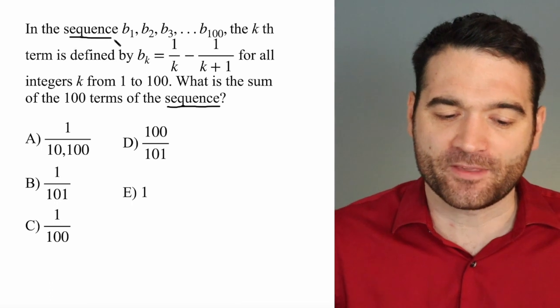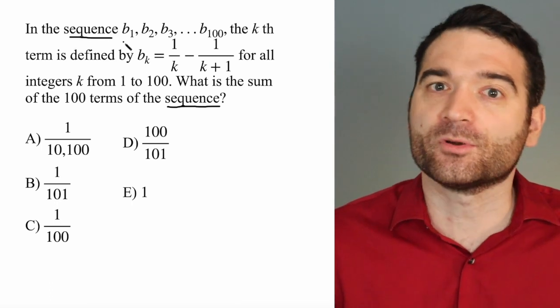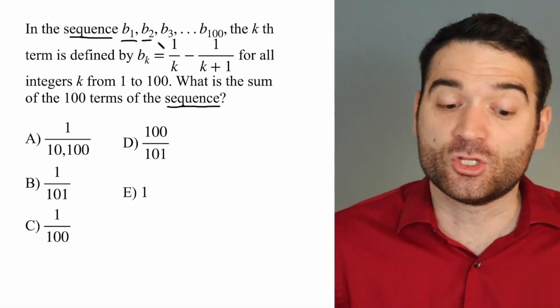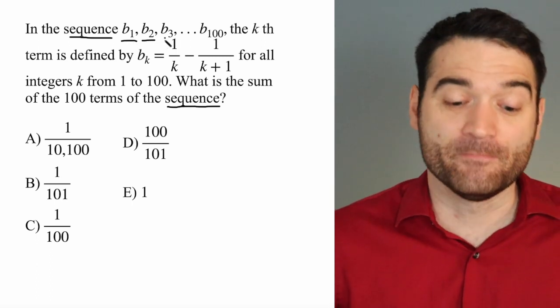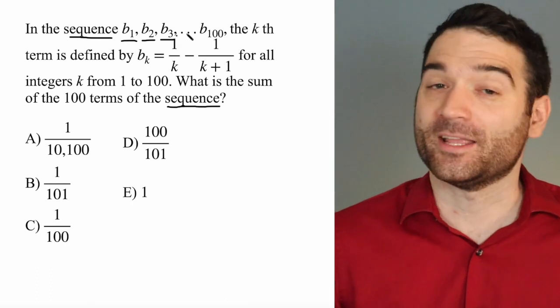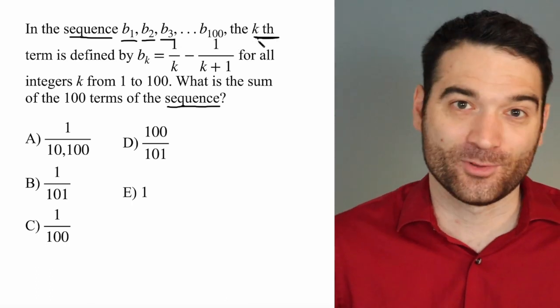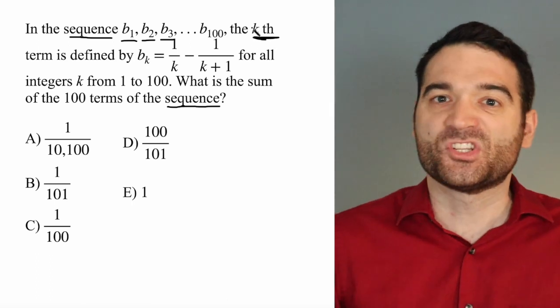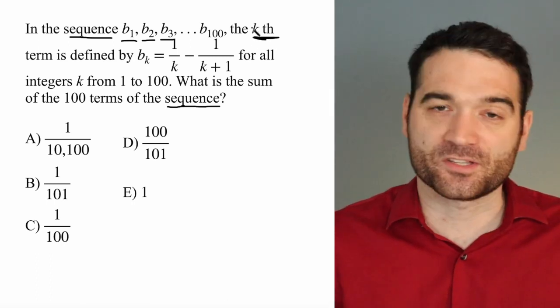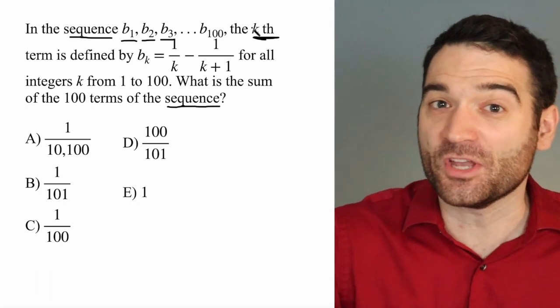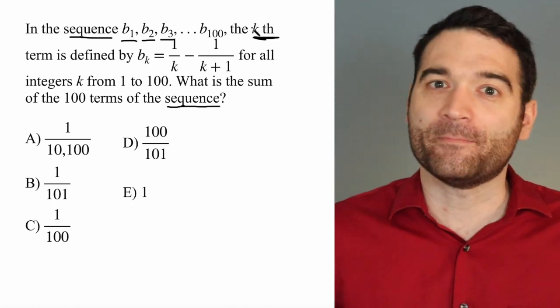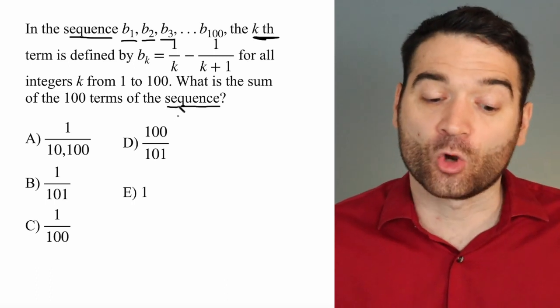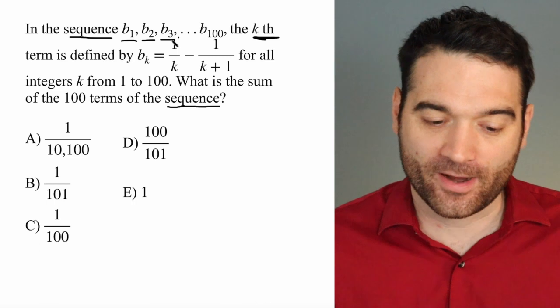And so in the sequence that we have here, our numbers are labeled. B1 is the first term. B2 is the second term. B3 is the third term, and so on and so forth. The k-th term, you might have thought that was a typo when you read it, but the k-th term just describes some number. So for instance, if k is 56, we're talking about the 56th term. So here's where our rule comes into play, our sequence rule.